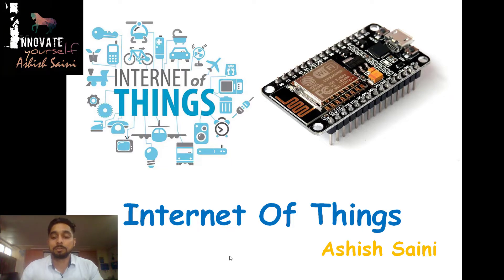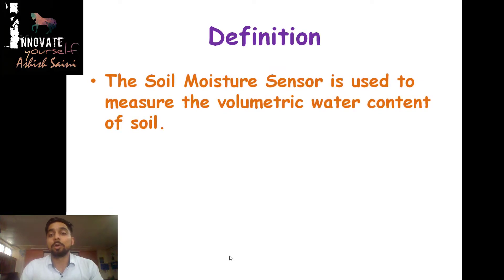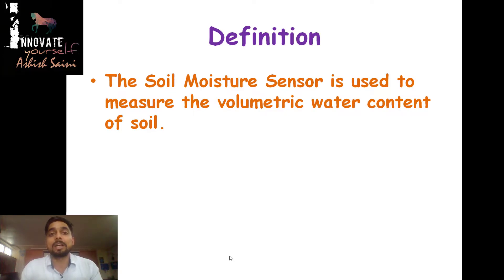Let's start by looking at what a soil moisture sensor is and why we use it. The soil moisture sensor is used to measure the volumetric content of water in soil. In short, you are checking what water content your land or soil contains, so you can accordingly give the water supply to your land. This is a direct example for farmers who have land but do not know whether their land is full of moisture or not.